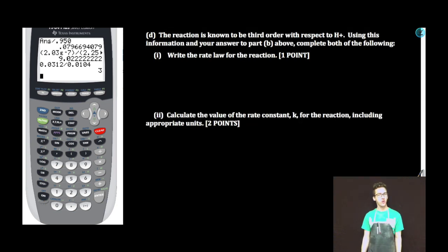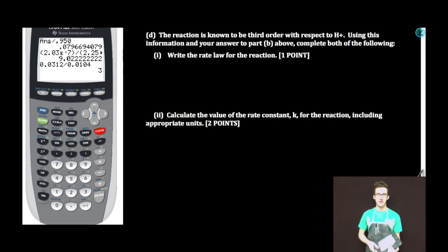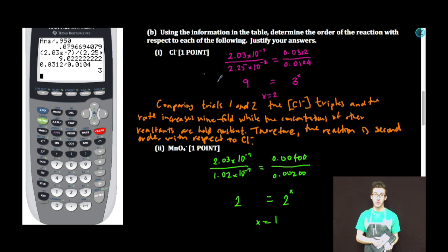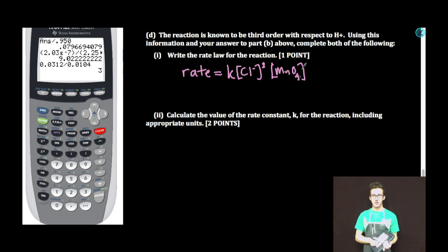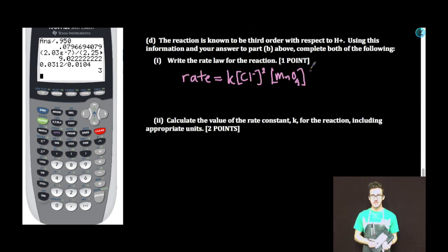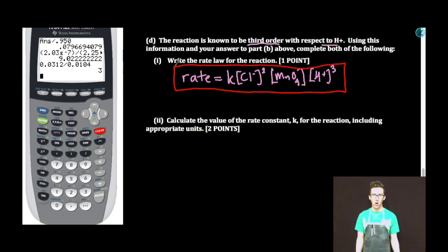Part D. The reaction is known to be third order with respect to hydrogen ion. Using this information and your answers to part B, complete both of the following. Subpart I: write the rate law for the reaction. Rate equals the rate constant k times the concentration of chloride ion squared — second order from part B — times the concentration of permanganate ion to the first — first order from part B — times the concentration of hydrogen ion to the third, as given.